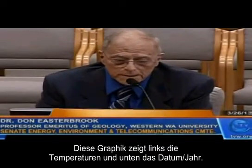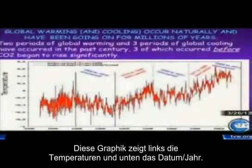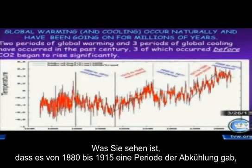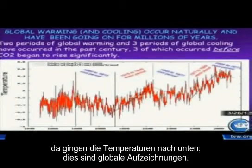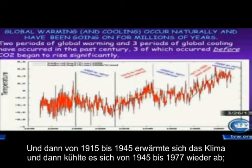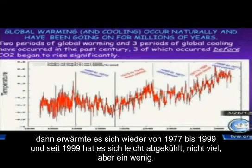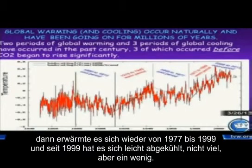This graph shows temperature on the left-hand side and the date and year on the bottom. There was a period of cooling from 1880 to 1915 — temperatures were going down. This is a global record. And then from 1915 to 1945, the climate warmed. Then it cooled again from 1945 to 1977, and it warmed again from 1977 to 1999. Since 1999, it has cooled slightly.